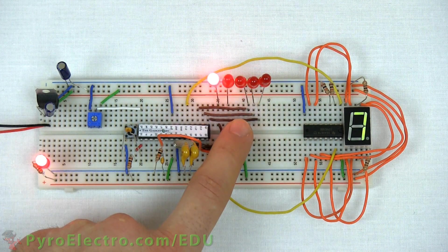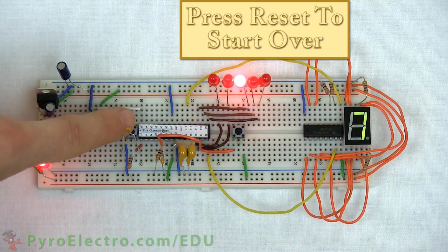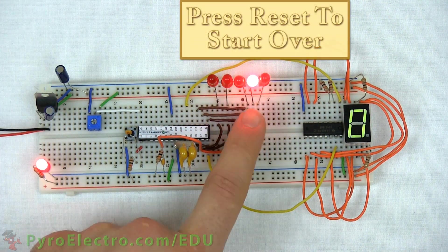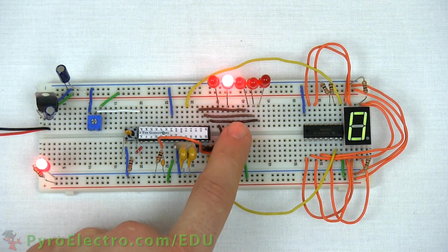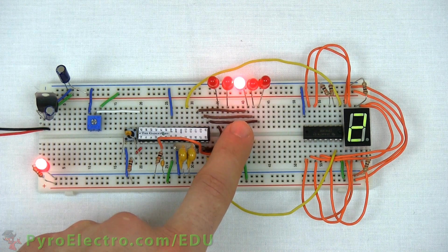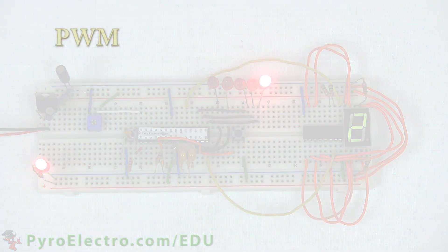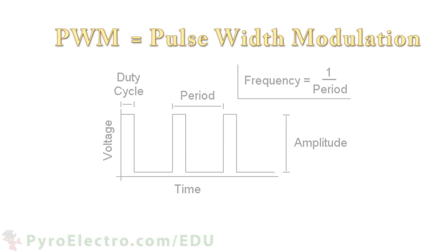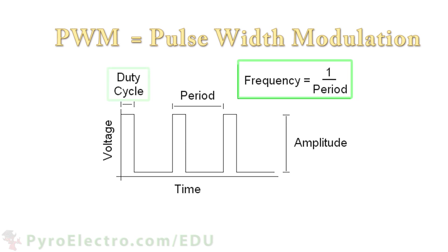Now that we've covered the basics of microcontrollers and built an example game, let's dive into a more advanced topic called Pulse Width Modulation, or PWM for short. PWM is a type of signal that conveys information through its frequency, duty cycle, and period.